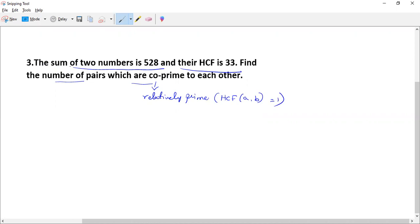According to the question, there exist two numbers and their HCF is 33. Then the numbers are 33A plus 33B, and their sum is equal to 528.